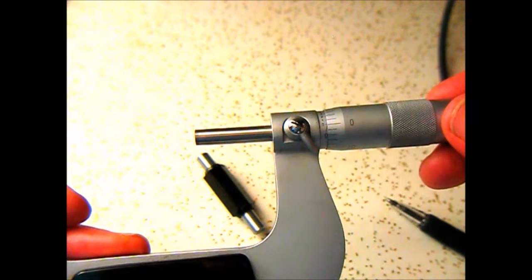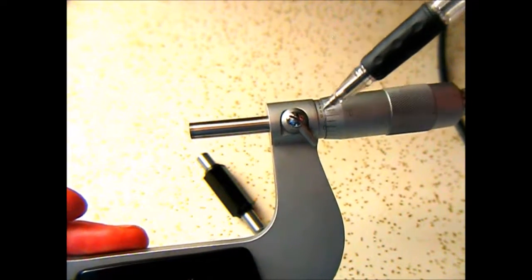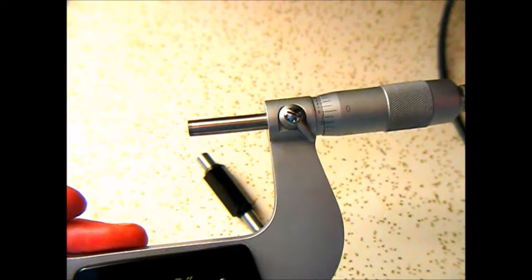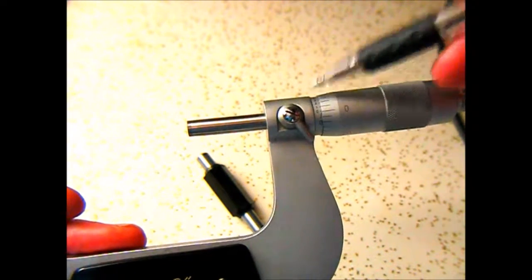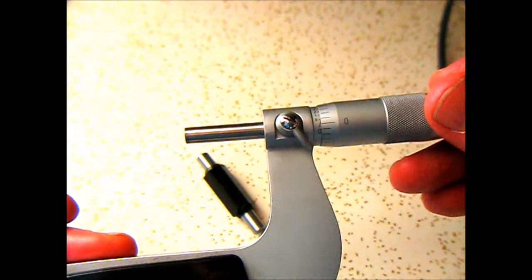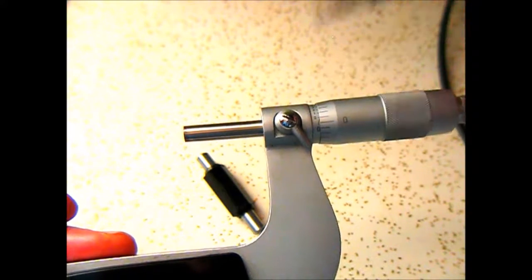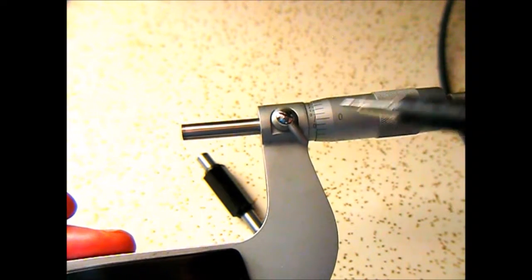Now on the one ten-thousandths scale, which is right here, there are ten graduations. Once you get to ten graduations, you would have moved it that far, because ten ten-thousandths equals one one-thousandth.